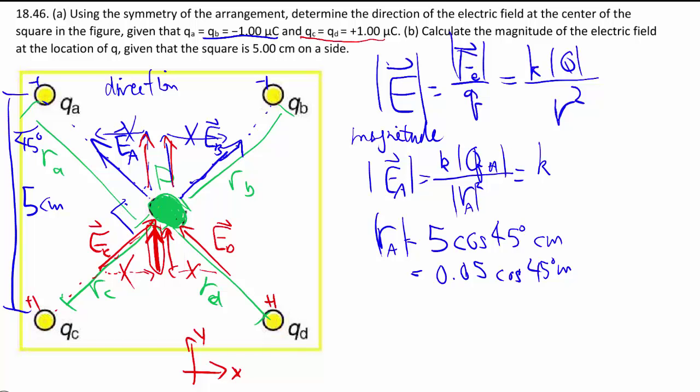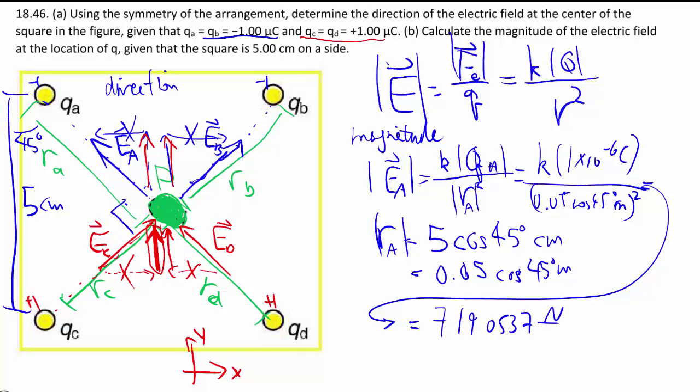Then we can work out the magnitude by summing everything in. K we know already. Q is 1 times 10 to the minus 6 Coulombs. Then we have 0.05 cos 45 meters all squared. That works out to some fairly big number. Let's put it in the direction. We know it goes that way, and that's for my Ea.